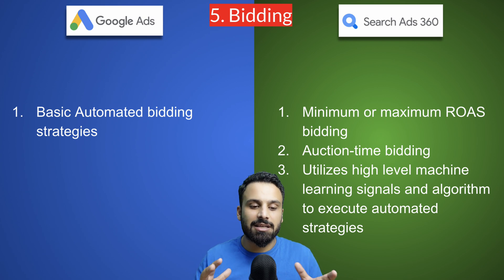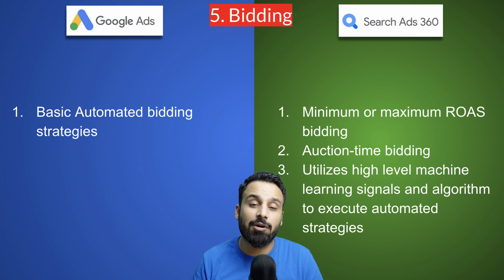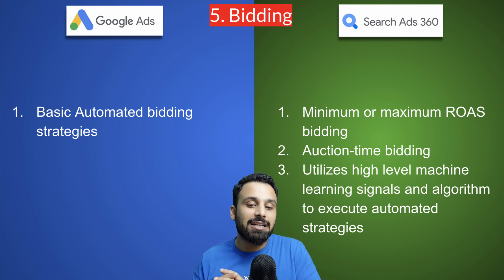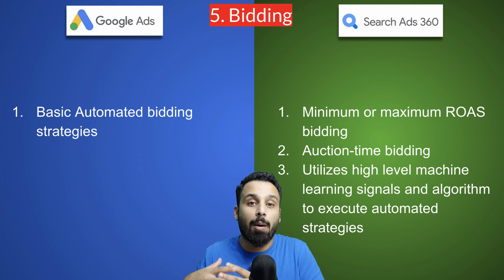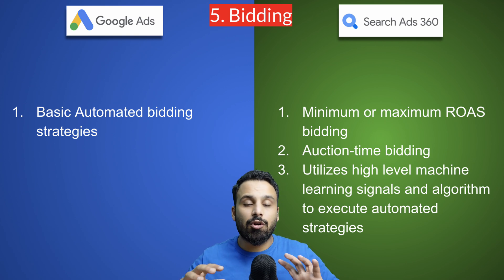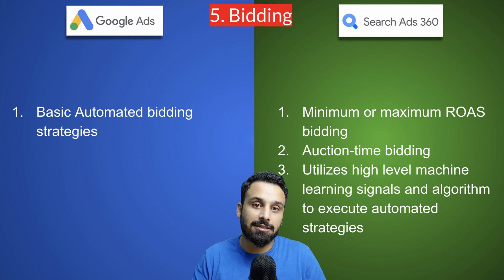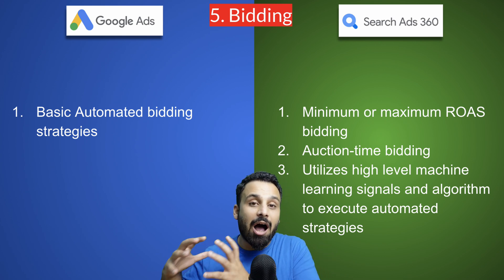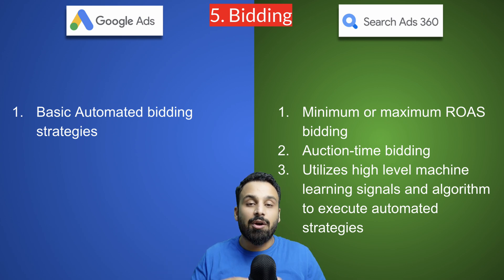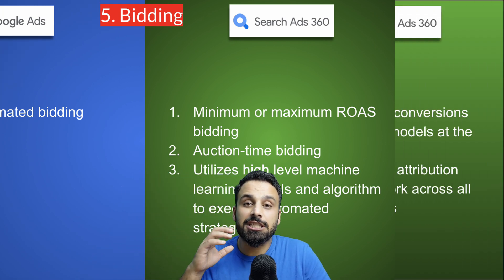The fifth difference is bidding. Google Ads offers around eight automated bidding strategies such as target ROAS, maximize conversions, and maximize clicks. Search Ads 360 offers more advanced and efficient automated bidding strategies — for example, you can define a minimum and maximum ROAS range for a campaign. The machine learning and data signals used to power automated bidding in Search Ads 360 are more sophisticated, with more data fed to the algorithm, making its bidding strategies more efficient and more real-time.